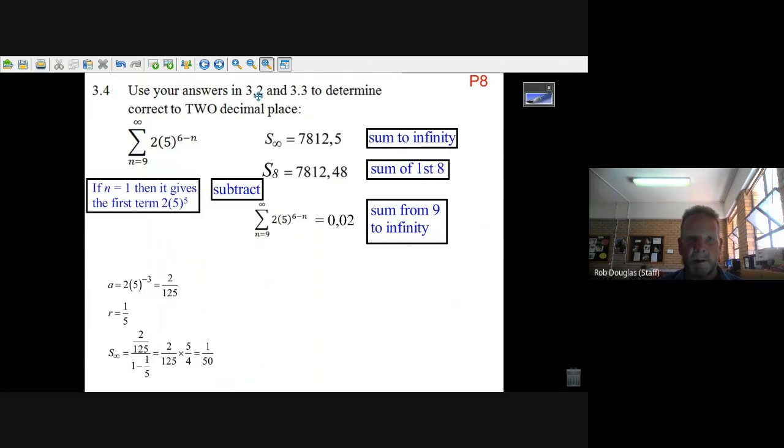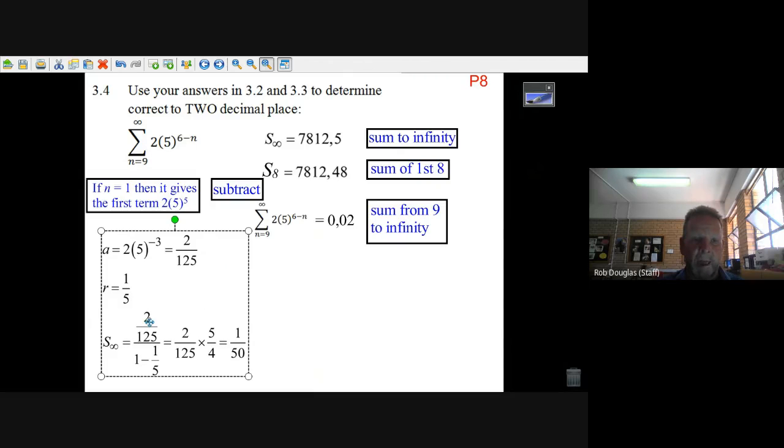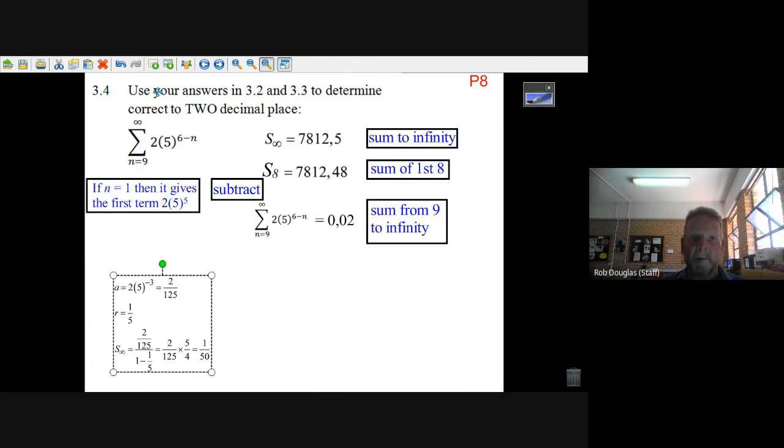The next question is a little bit tricky. It says use your answers in 3.2 and 3.3 to determine correct to two decimal places this summation: the sum from n=9 to infinity of 2(5^(6-n)). When I first did this, I just put it into the formula the regular way and got 1/50, but that's not how they want you to do it.